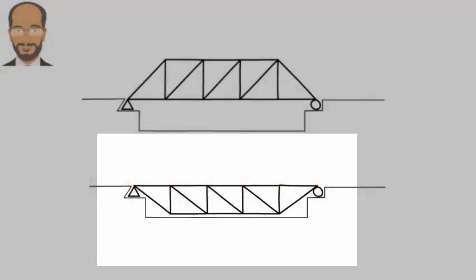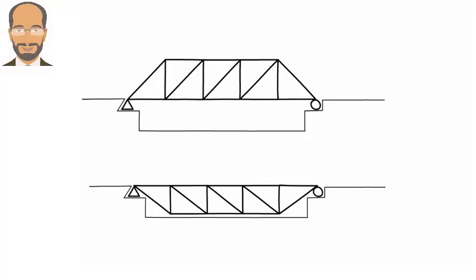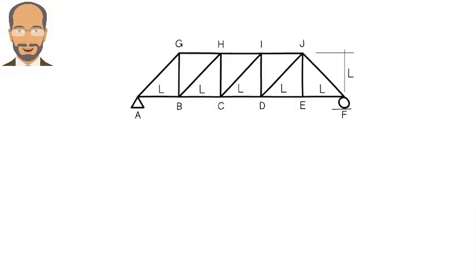To draw the influence line for a specific member, we find the axial force in the member every time the unit load visits a joint. For this bridge, we need to do the calculation four times. One time when the load is placed at B. Another time when the load is at C. One more time when the load reaches D. And a final time when the load is at E.